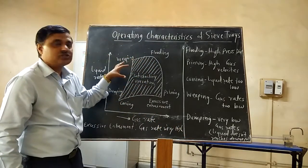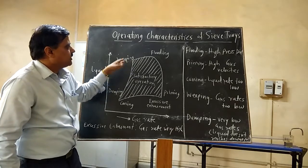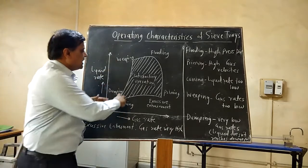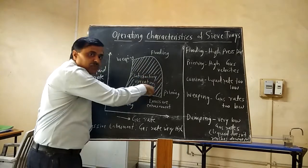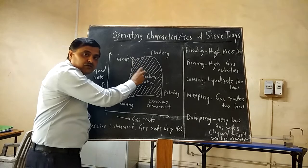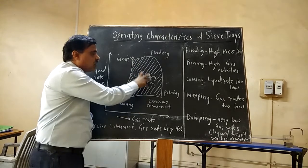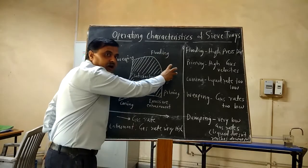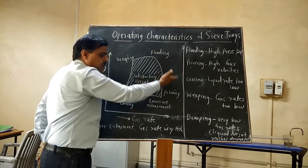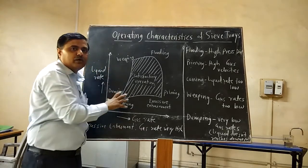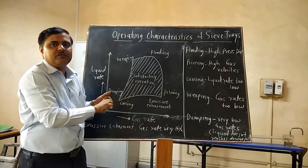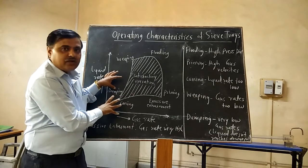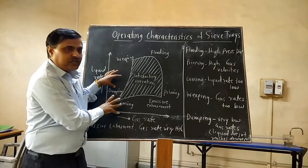This is all about the different difficulties operating in the sieve tray column — flooding, priming, excessive entrainment, coning, dumping, and dripping. These occur outside the shaded portion. The satisfactory operation is the shaded region; whatever the flow rates of gas and liquid are there, the column works satisfactorily inside this shaded region. Outside the shaded region, different difficulties occur. This is all about the operating characteristics of sieve trays. Thank you very much.